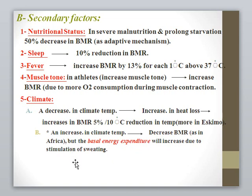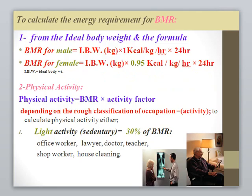It is important to remember that basal energy expenditure increases in cold environments, and also in hot environments due to sweating. To calculate basal metabolic rate from ideal body weight: for males, BMR equals ideal body weight in kilograms multiplied by 1 kilocalorie per kg per hour, multiplied by 24 hours. For females, BMR equals ideal body weight multiplied by 0.95 kilocalorie per kg per hour, multiplied by 24 hours.